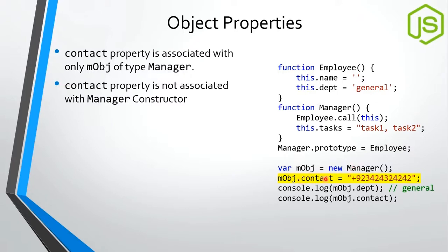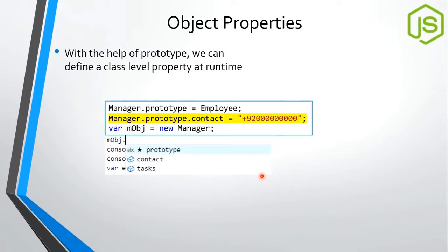We can also define properties at runtime. For example, we can add a `contact` property to a specific manager object at runtime - this is something that would cause an error in class-based languages since `contact` doesn't exist in the class definition. But in JavaScript we can associate that property with a specific object instance only. Alternatively, using `Manager.prototype.contact`, we can define a property associated with the entire class, making it available to all objects of that class.